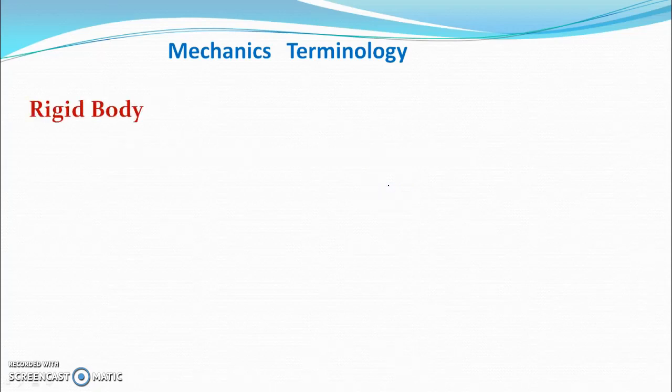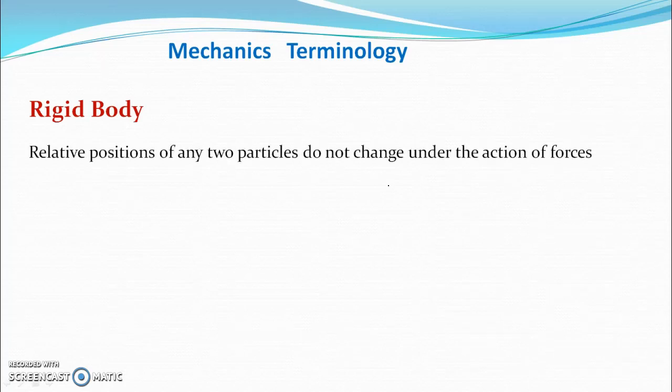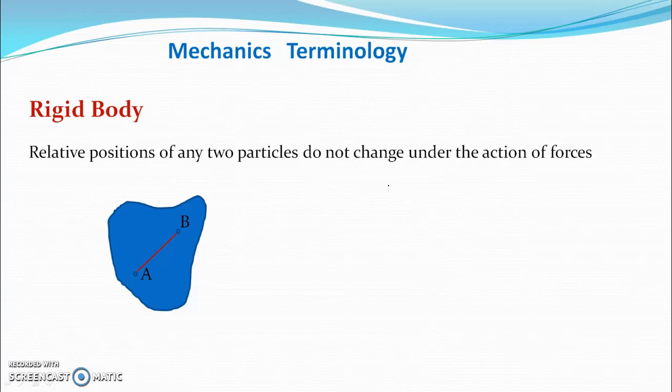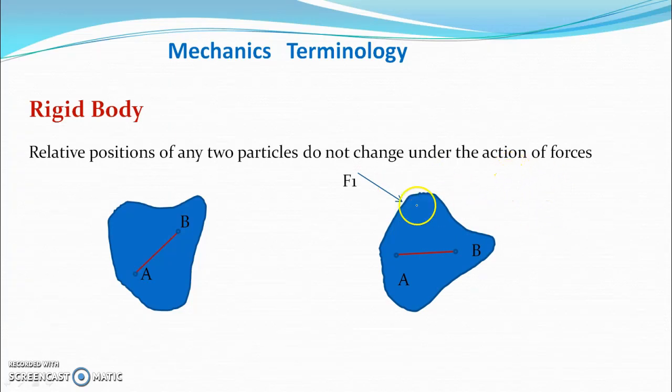Rigid Body. A body is said to be rigid if the relative position of any two particles do not change under action of forces. Let us consider a body. There are points A and B, two points at fixed distance. If we apply a force, it should not change under action of force. When force is applied here, the distance from A and B are same and the body is not deforming. This way, this body is called the rigid body, because it's not deforming when a force is applied on it.